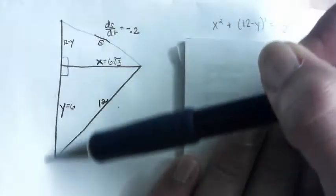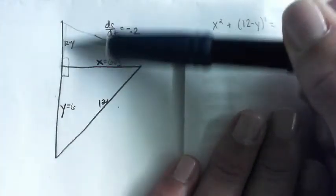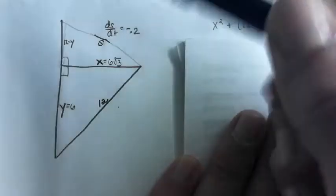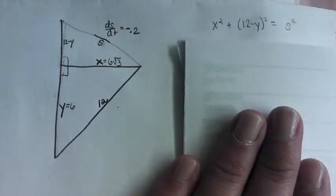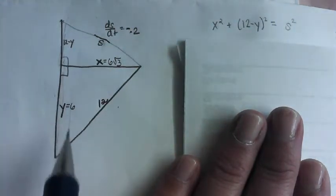But right now, the height of the building is 12. So whatever the Y coordinate is, this has to be 12 minus that Y coordinate because this is the top of the building. So I have a length of X, Y, and 12.